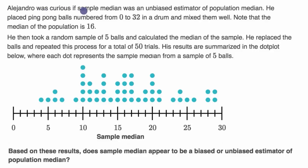We're told Alejandro was curious if sample median was an unbiased estimator of population median. He placed ping pong balls numbered from zero to 32, so I guess that would be 33 ping pong balls in a drum and mixed them well.